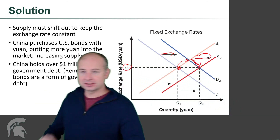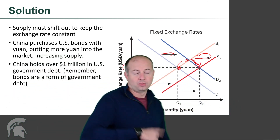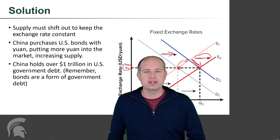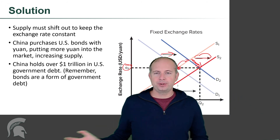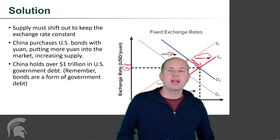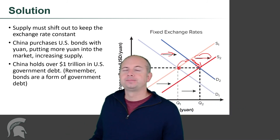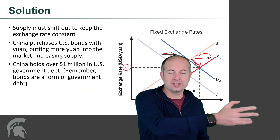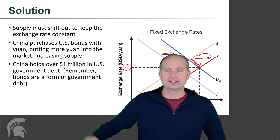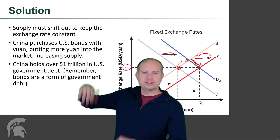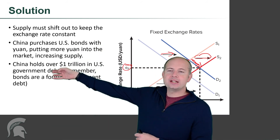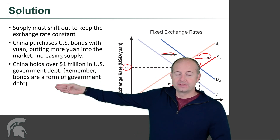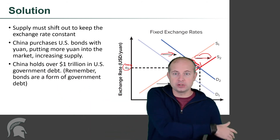China has a bunch of yuan it wants to get into the market. What they're going to do is sell a bunch of yuan — put yuan into the market — by buying US dollars and US bonds. Yuan goes out into the market; US bonds go back to China's central bank. This is a good representation of reality: China now holds over a trillion dollars in US government debt. Bonds are a form of government debt — if you buy a bond, you're buying an IOU from the government.